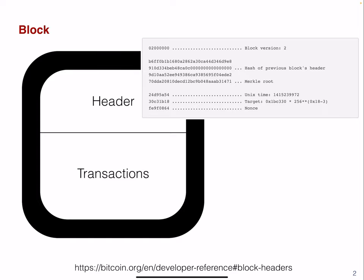What does the header contain? Well, the header contains, for example, the block version — like what's the recent version of this block — the hash of the previous block's header, which is a pointer to the previous block, and the Merkle root. Remember the cryptographic data transaction lecture.